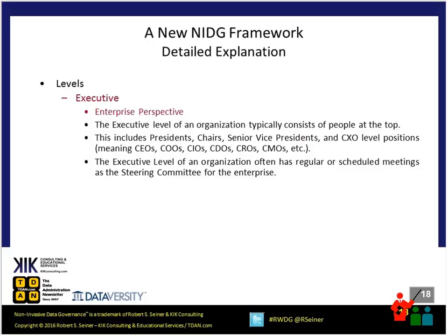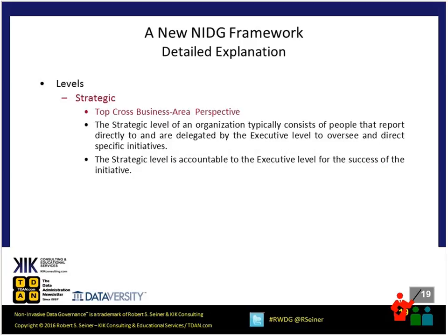The executive level provides the enterprise perspective. When we think about the executive level, we think about the people at the very top — the chief information officer, chief executive officer, operating officer, or chief data officer. The executive level typically meets from time to time. One goal of the data governance program is to get data governance into the awareness of people at the executive level — making it a line item in executive steering committee meetings, helping them understand how data governance is moving along and how it's being applied in the organization.